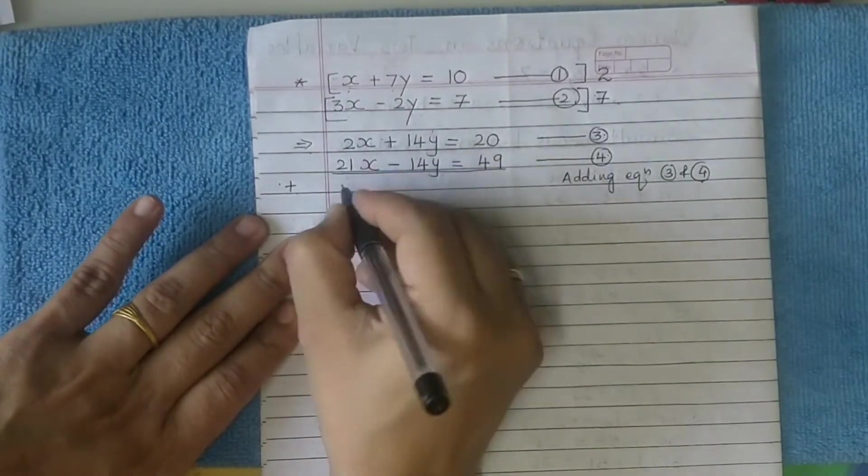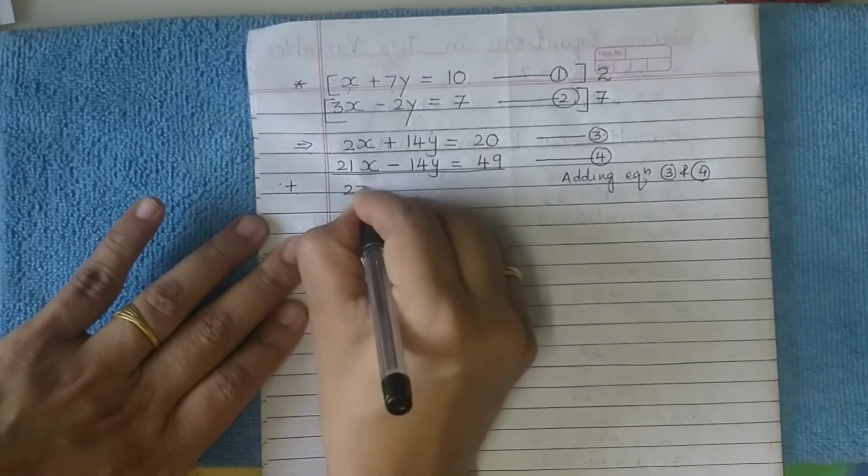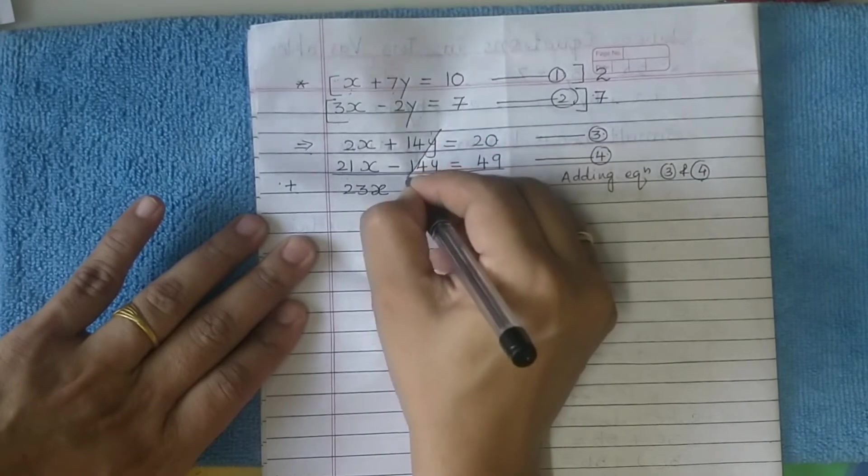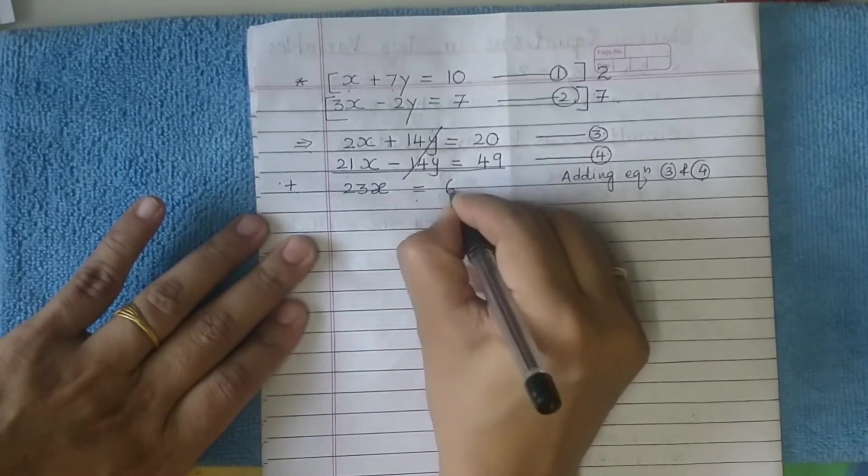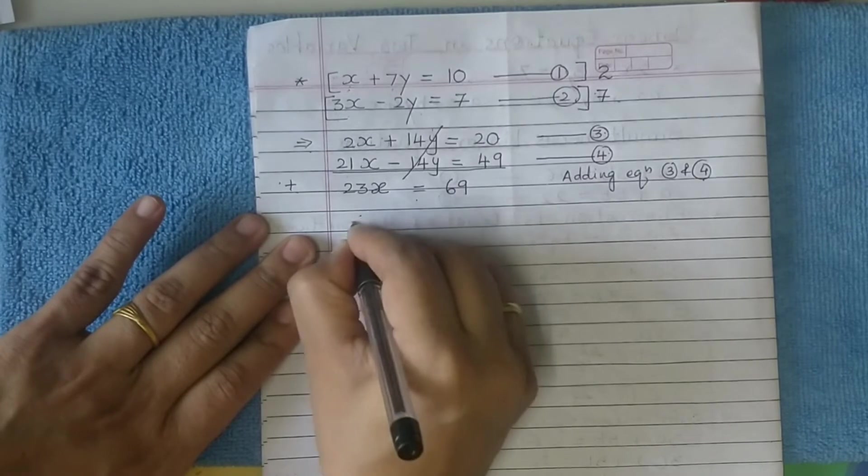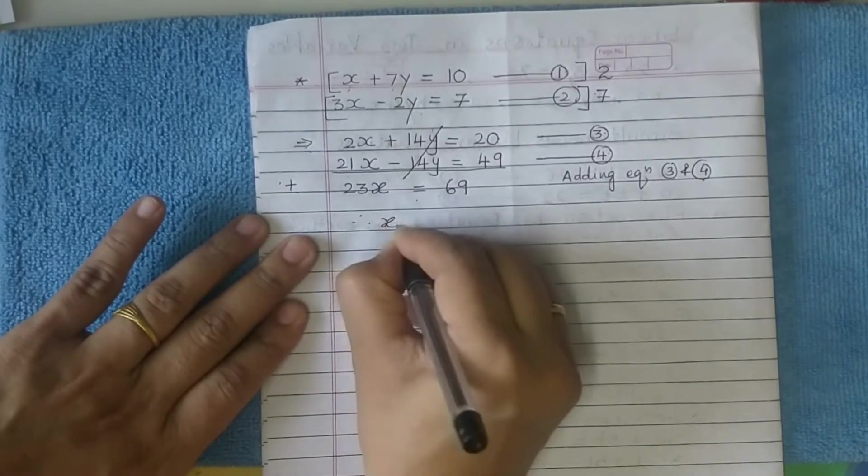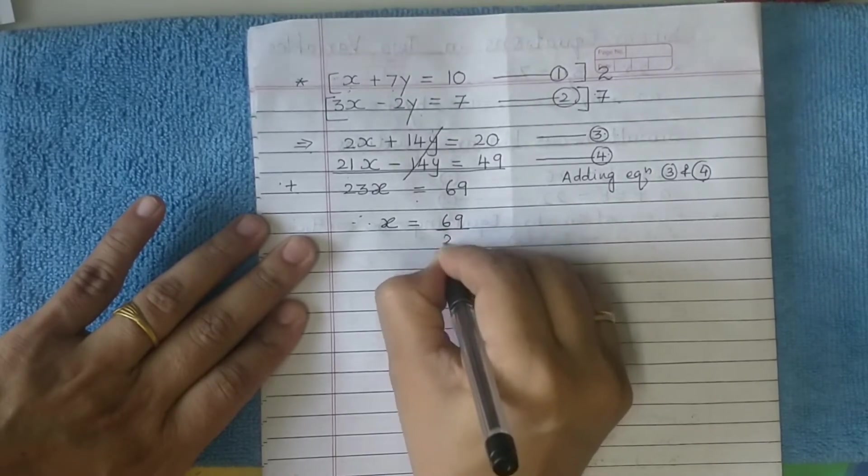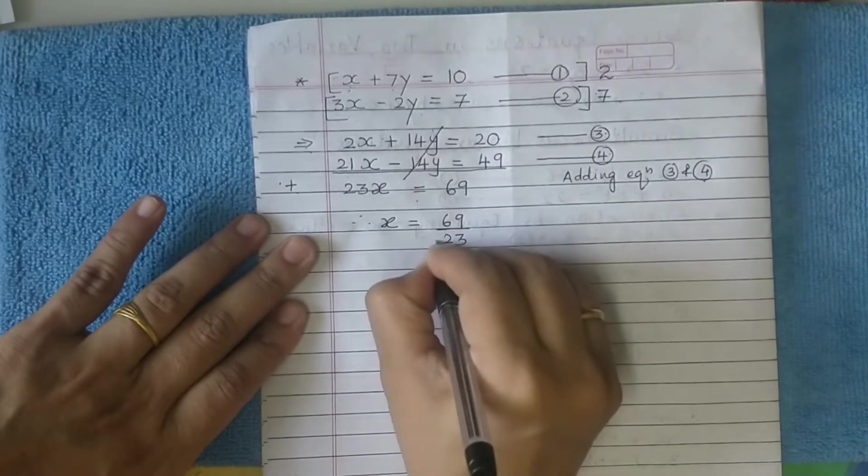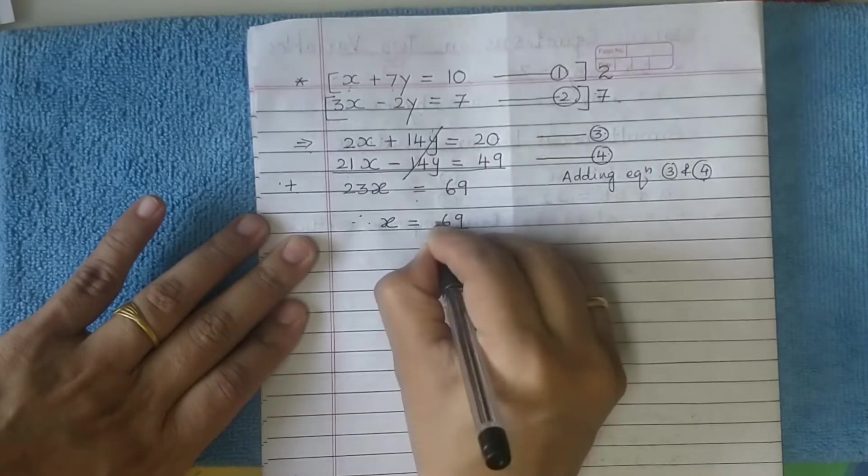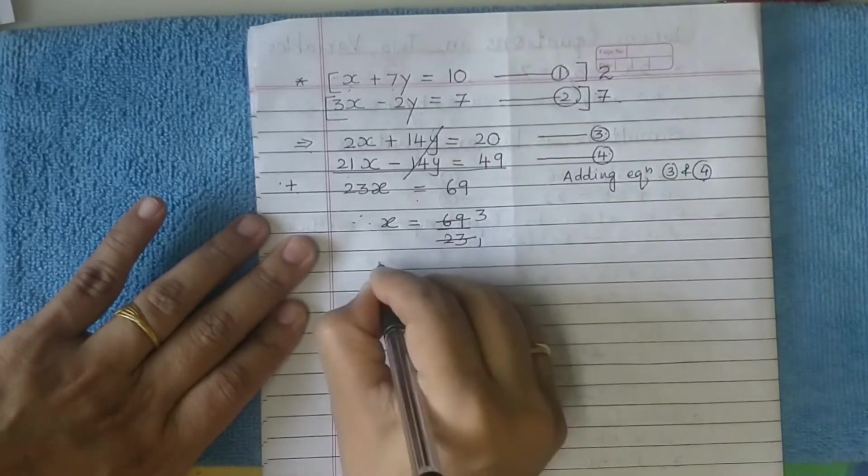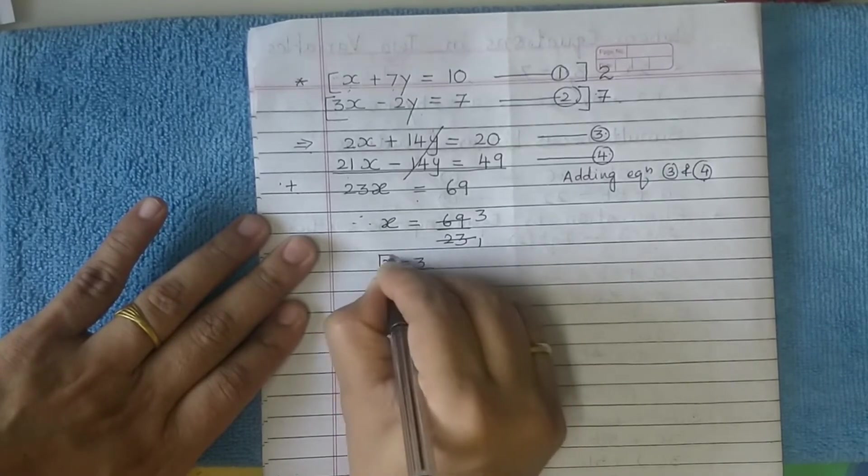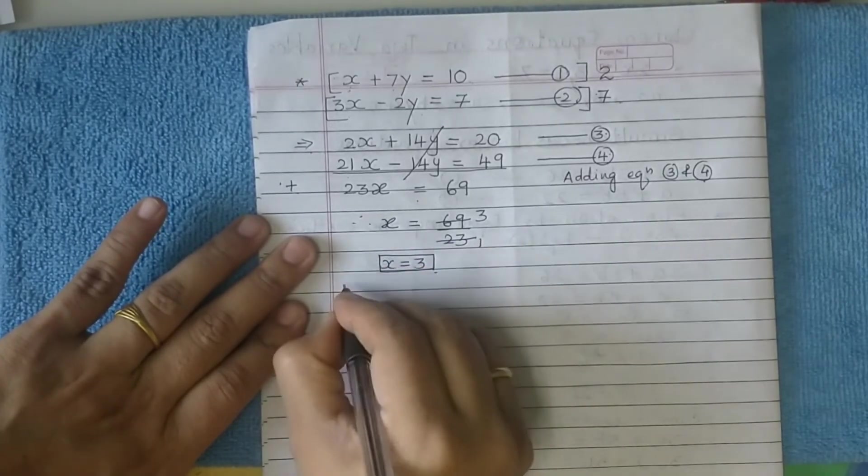21 plus 2, you get 23x, plus minus 14y gets cancelled, equals 69. Thus x equals 69 upon 23. 3 times 23 is 69, so x equals 3.